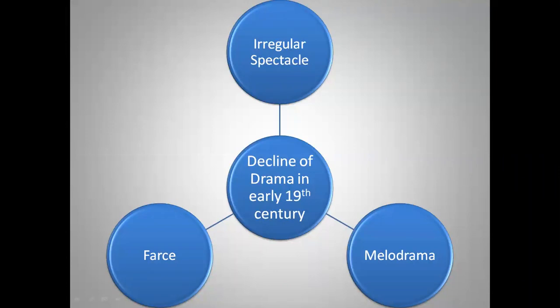The drama of the earlier 19th century was on the way to decline. Why was the drama on the way of decline? There were a few reasons. Due to irregular spectacle, that is visually striking performance — they were not very good performances in the early 19th century. And then we had melodrama. Melodrama is a sensational dramatic piece with exaggerated characters and exciting events. And there was farce — a comic dramatic work with ridiculous but amusing behaviour of characters.